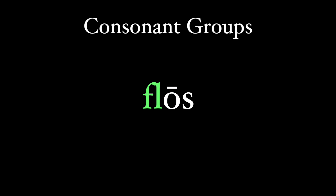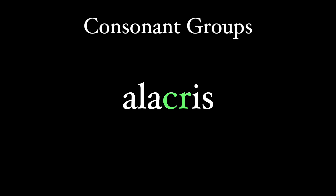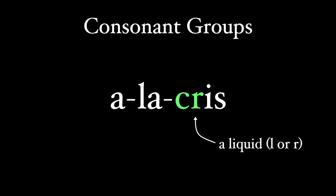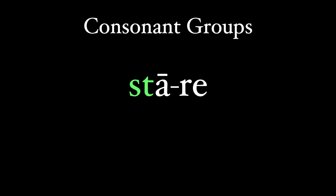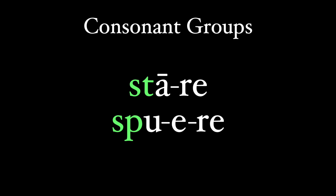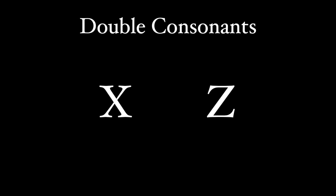Let's take a Latin word like 'flos.' This too is monosyllabic, but the 'fl' functions as a consonant group - we don't separate these two consonants, we keep them together. In the word 'alacris,' the 'cr' is a consonant group and forms the 'cr' sound, so these two consonants together begin the third syllable: a-la-CRIS. Often this will happen if the second consonant is an 'l' like in 'flos,' or an 'r' like in 'alacris.' These consonants, the 'l' and the 'r,' are called liquids. You'll also see other consonants in a consonant group, like 'st' as in 'stare,' or 'sp' as in 'spuere,' but usually just at the beginning of words.